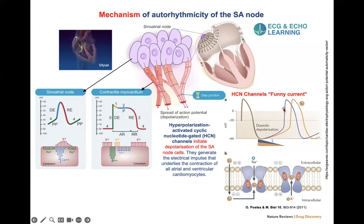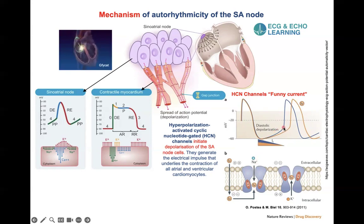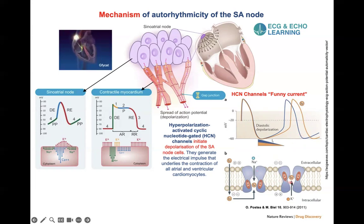The blue curve represents the action potential pattern in the SA node. During the hyperpolarization phase, the funny channels are activated. They are permeable to sodium and potassium, and probably also to calcium. Sodium entering the cell raises the membrane potential slightly — this is the first phase of the SA node action potential. At a threshold, calcium channels open, calcium enters the cell, producing the depolarization phase. Then repolarization begins until hyperpolarization occurs, which opens the funny channels again. This cycle repeats itself on average 70 times per minute.